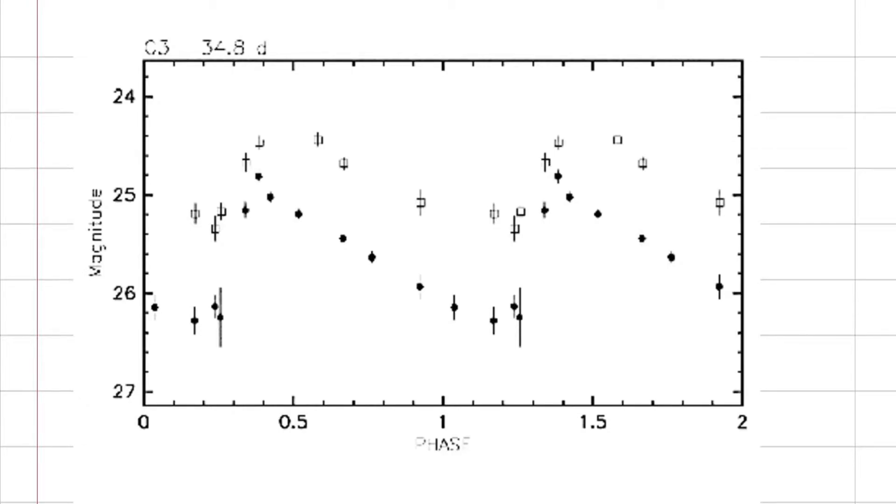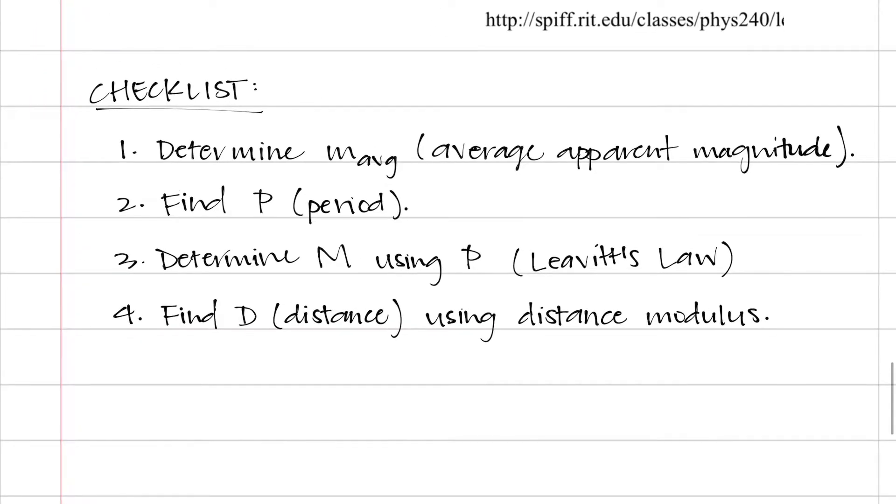Hey guys, so I'm gonna try walking you through how to find the distance to a Cepheid variable star if you're given the period luminosity curve, like the one we see here in this image. So I've written a checklist, we're gonna follow the steps in this checklist one by one to finally find the distance to that star.